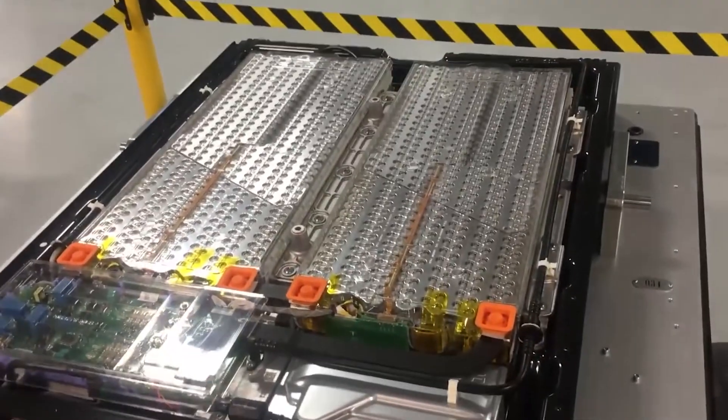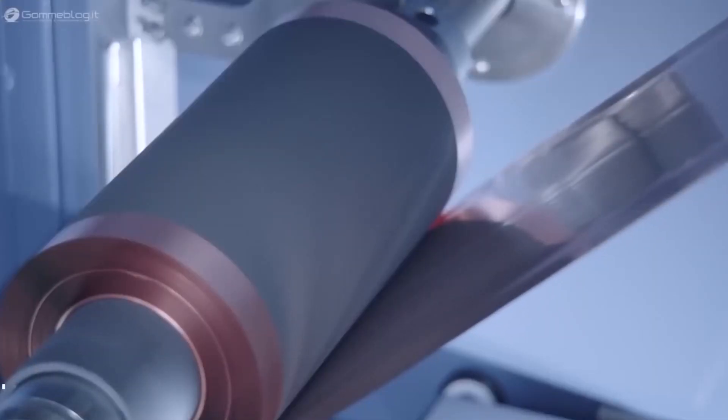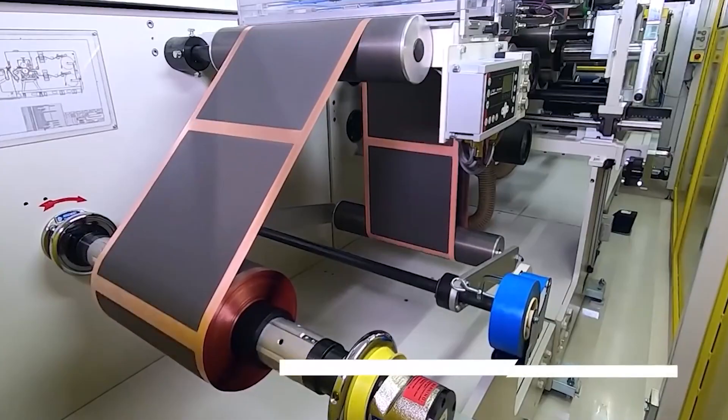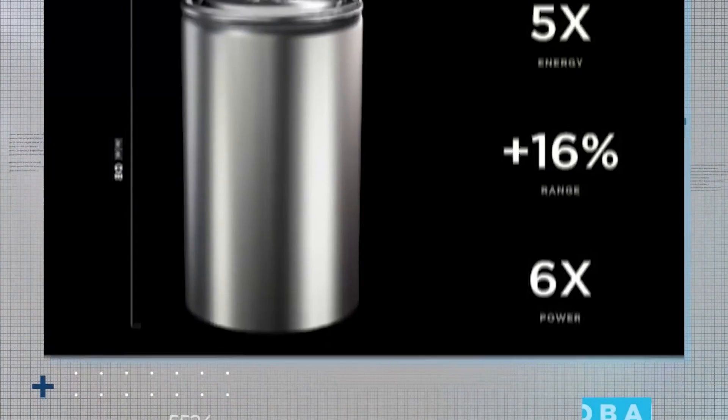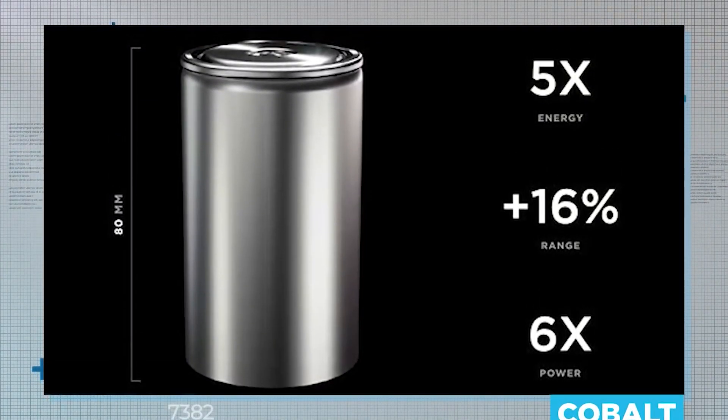So far in testing, it doesn't overheat and performs well below zero. The blade battery offers a high level of safety in addition. A thorough nail piercing test verified the blade battery's surface temperature to be between 30 and 60 degrees Celsius, which is extremely low while producing no smoke or flames.